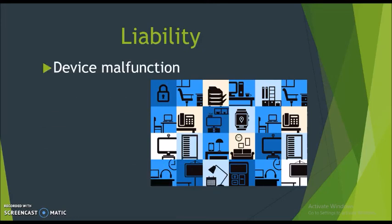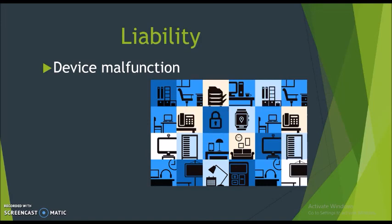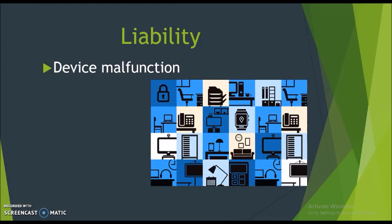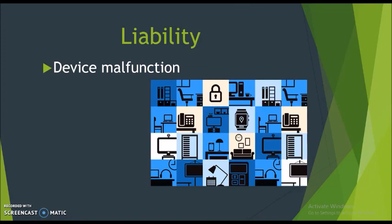Device malfunction: IoT introduces a deeper level of automation which can have control over critical systems impacting life and property. When these systems fail or malfunction, this can cause substantial damage. For example, if an IoT furnace control system experiences a glitch, it may fail in an unoccupied home and cause frozen pipes and water damage. This forces organizations to create measures against it.